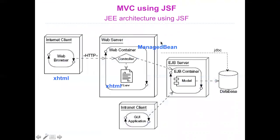JSF respects the MVC architecture. We start first of all with the view — not with JSP, but with XHTML. We talk about XHTML because it's like using JSP: we have HTML but containing some dynamic components. We send the request to the controller, which in JSF is called a Managed Bean. It is simply a servlet with additional features that help in the interaction between the XHTML and the controller. The controller then sends the answer back to the XHTML. If the Managed Bean needs to access a database, it can use JDBC, or normally it uses EJBs, as we will see at the end of this chapter.